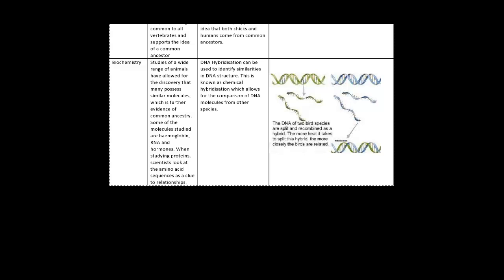In DNA hybridization, in my example, I've got two bird species. They're split and recombined as a hybrid. The more heat it takes to split this hybrid, the more closely the birds are related. What that basically means is that these two DNA parts, they're mixed together. Now they're trying to take this hybrid, they're trying to split this hybrid using heat. To prove that they're joining and that these two strands can actually perfectly match, if they do take a long time to split, that means that it's very likely that the birds were closely related.